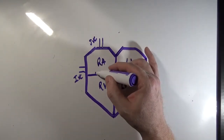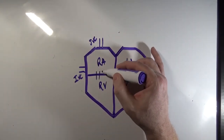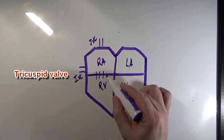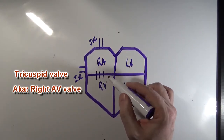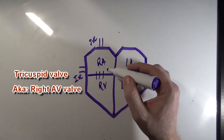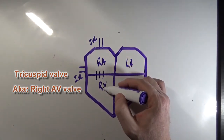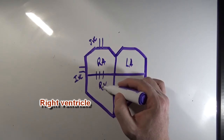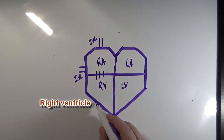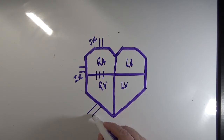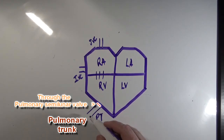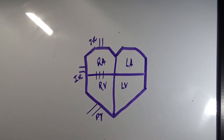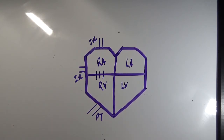The right atrium will pass blood through a tricuspid valve — I drew three lines here to represent the three cusps. Blood will pass through that valve and go into the right ventricle. When the right ventricle contracts it's going to send that blood out through the pulmonary trunk, which branches into the right and left pulmonary arteries to bring deoxygenated blood to the lungs to get oxygen.